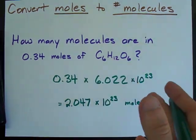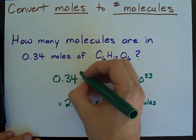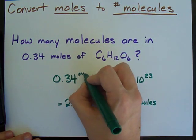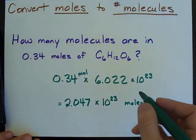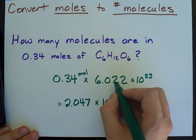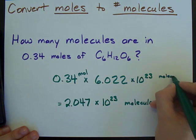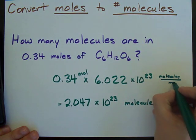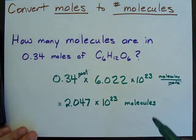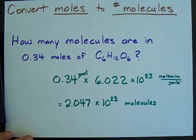If you're asked to include units, I guess I forgot my units here. This is 0.34 moles, and this is 6.022 times 10 to the power of 23 molecules per mole. You'll notice that moles cancels out, and you're left with the number of molecules.